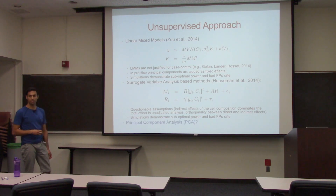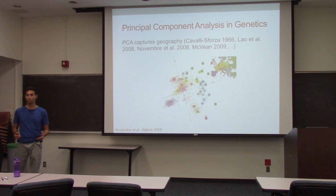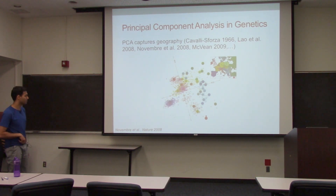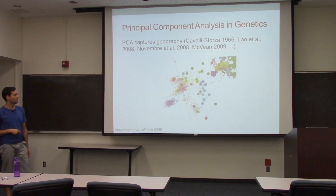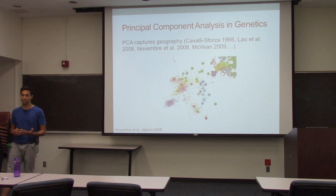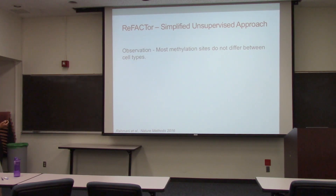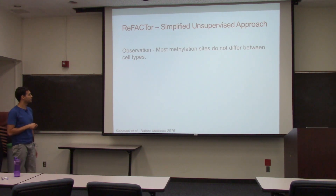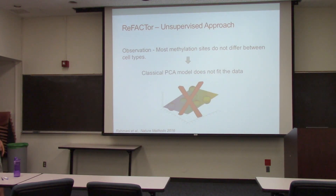The first thing that comes to mind is: what about PCA? PCA is very well-known, and a famous figure from a paper demonstrates how PCA can capture geographic location — in this case in Europe — when applied to genotype data. We think of the methylation cell composition problem as very similar. But when you just try PCA on methylation, it doesn't go very well. A more careful look at the data tells you that most methylation sites are not correlated with cell type composition — there aren't many methylation sites that differ between cell types. So classical PCA doesn't work well in our case.